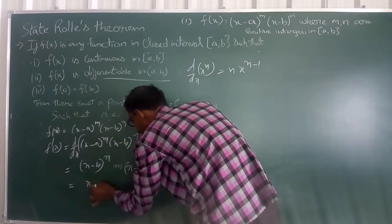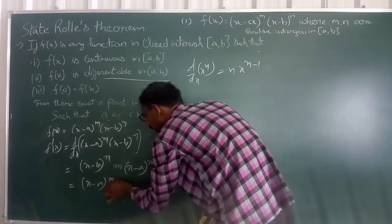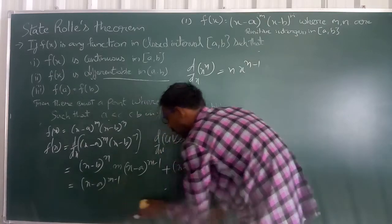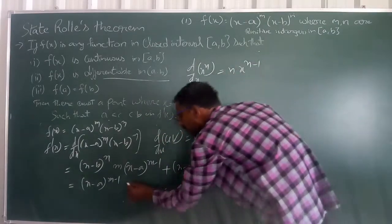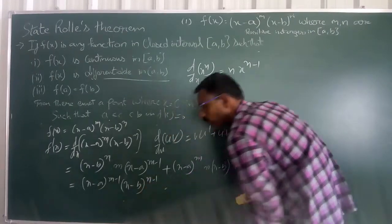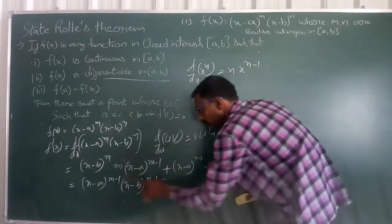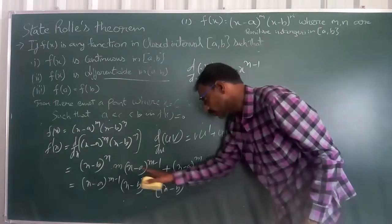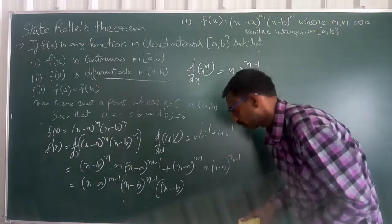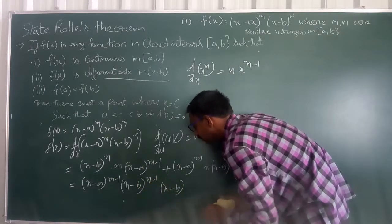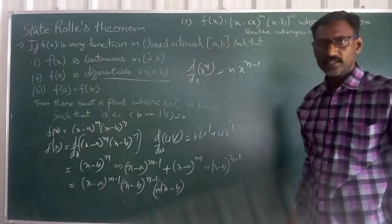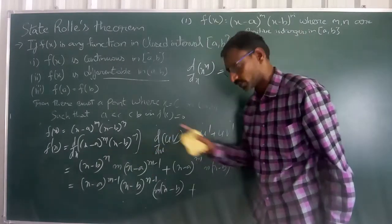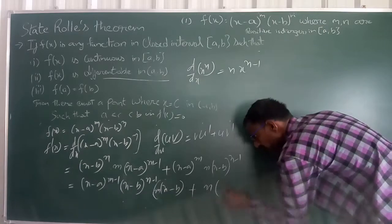Taking (x - a)^(m-1) out, and also taking (x - b)^(n-1) out. If both terms are taken out, then we get: (x - b) into m, plus n into (x - a).